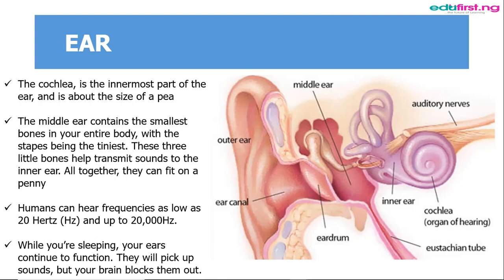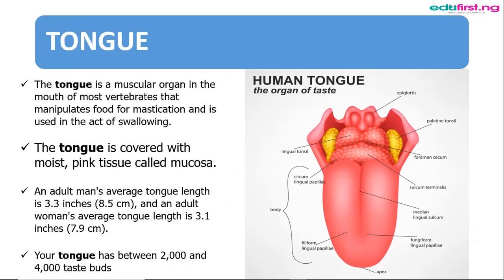The tongue is used to taste foods and to sense hot or cold in food and liquids. There are four different types of taste, which detect different flavors: sweet, which is detected at the tip of the tongue; sour; bitter, detected at the back of the tongue; and salt. The tongue helps us taste all these things.